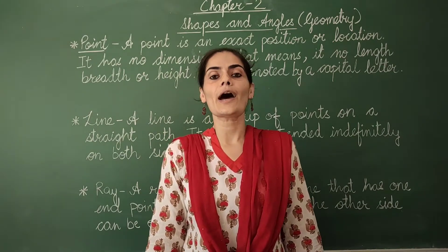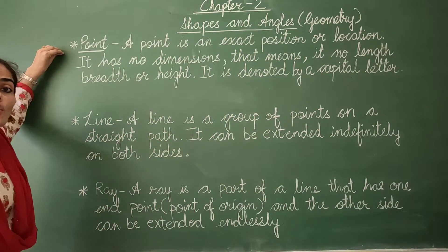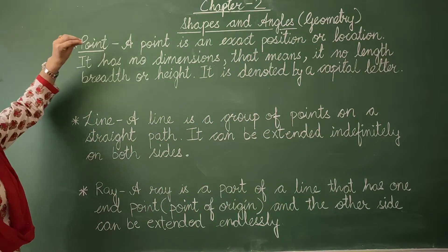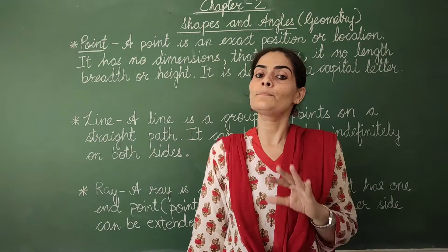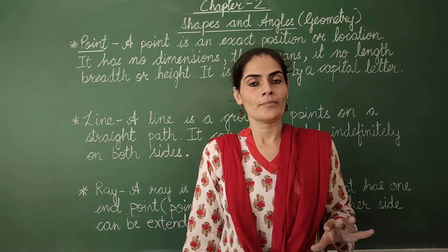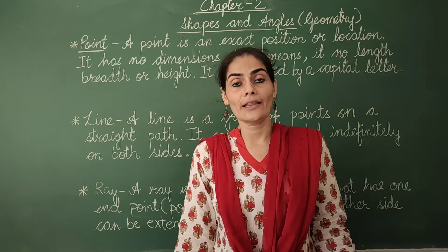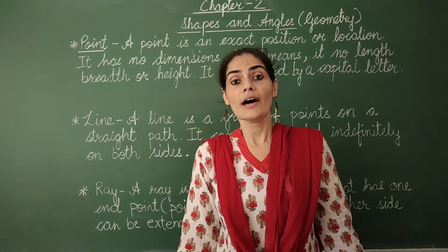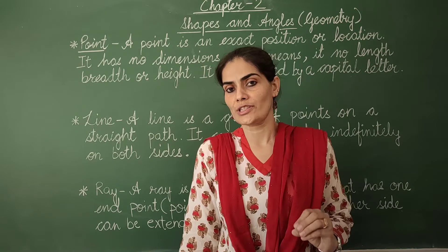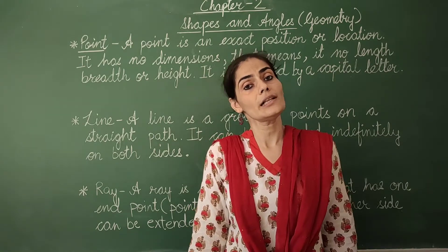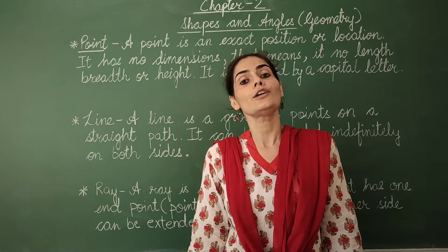So let's learn about the first basic thing in Geometry and that is a point. What is a point? A point is an exact position or location on a plane surface. It has no dimensions, which means it has no length, breadth, or height. A point is represented or denoted by a capital letter. A point is marked with a dot.